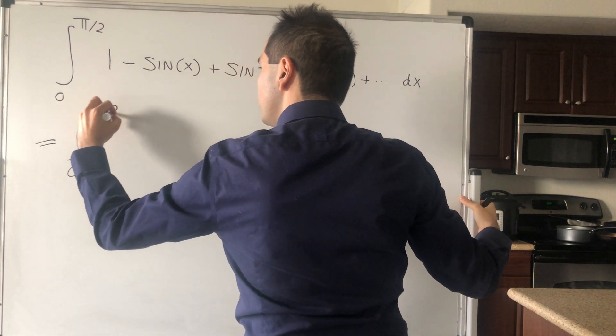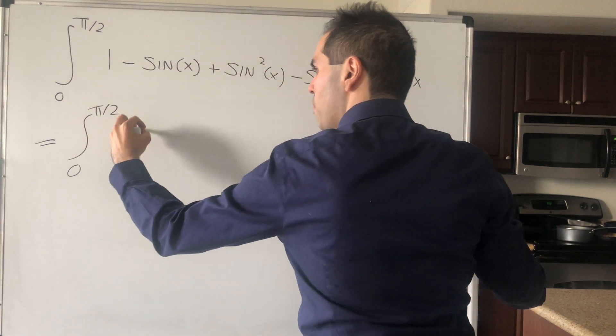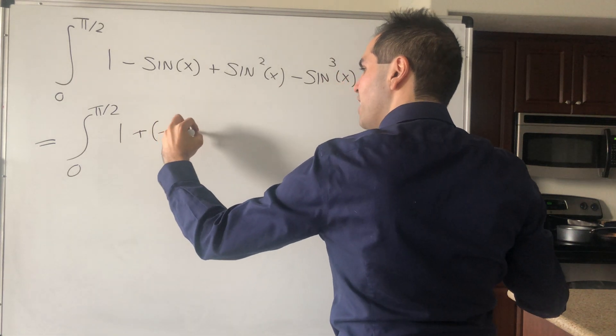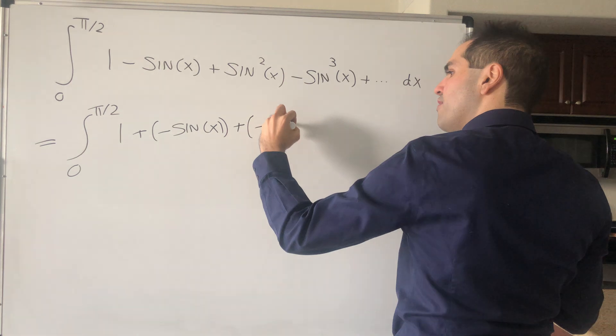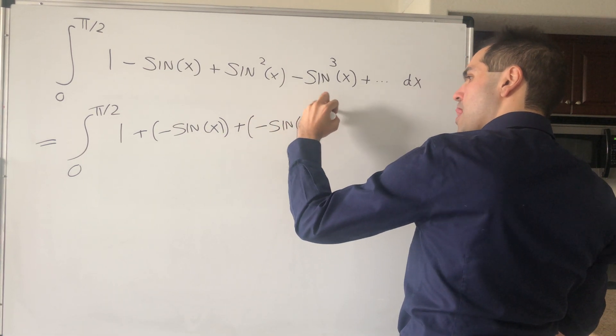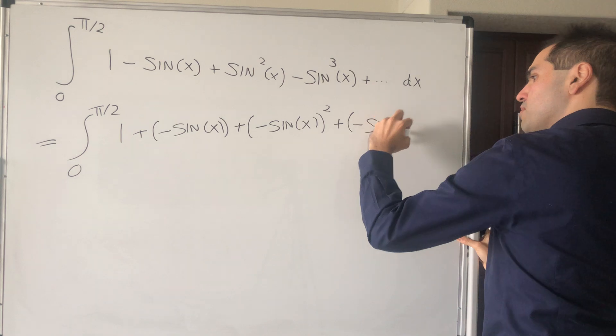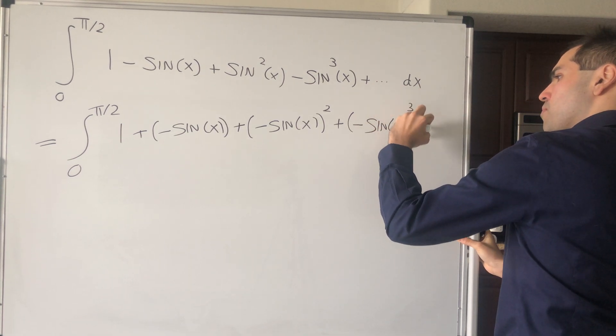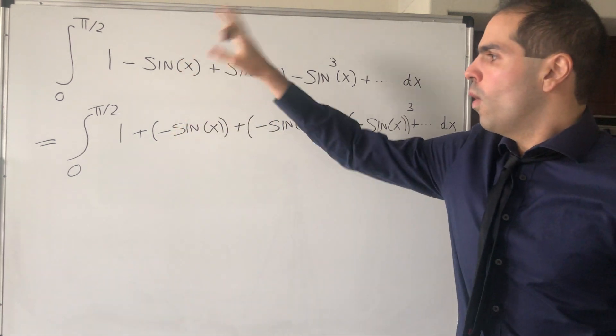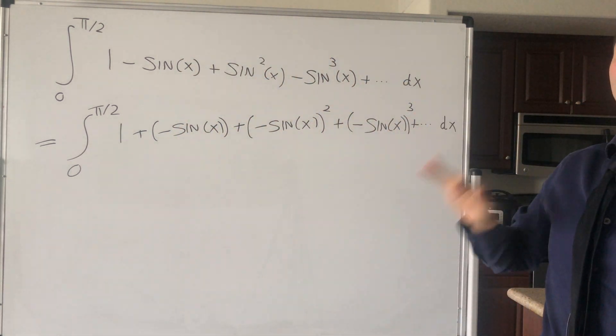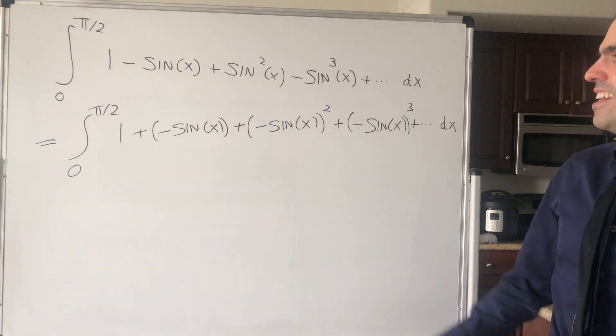1 plus minus sin of x plus minus sin of x squared plus minus sin of x cubed plus, etc., dx. But notice 1 plus blah plus blah squared plus blah cubed, etc. That's just the geometric series.